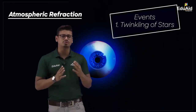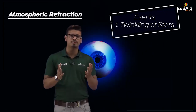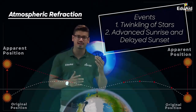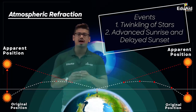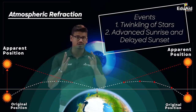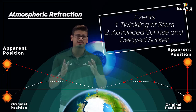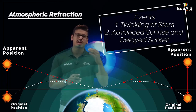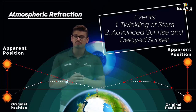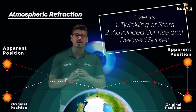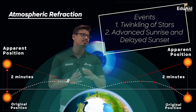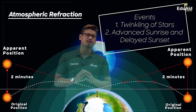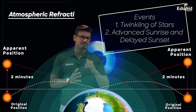The second event associated with atmospheric refraction was advanced sunrise and delayed sunset. The time difference between the apparent position of the sun and its original position is approximately two minutes, both in the case of advanced sunrise and delayed sunset.